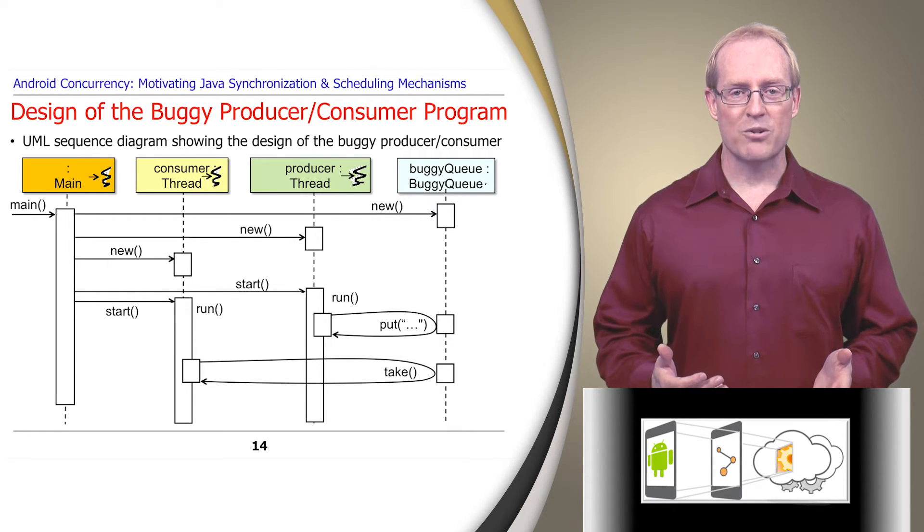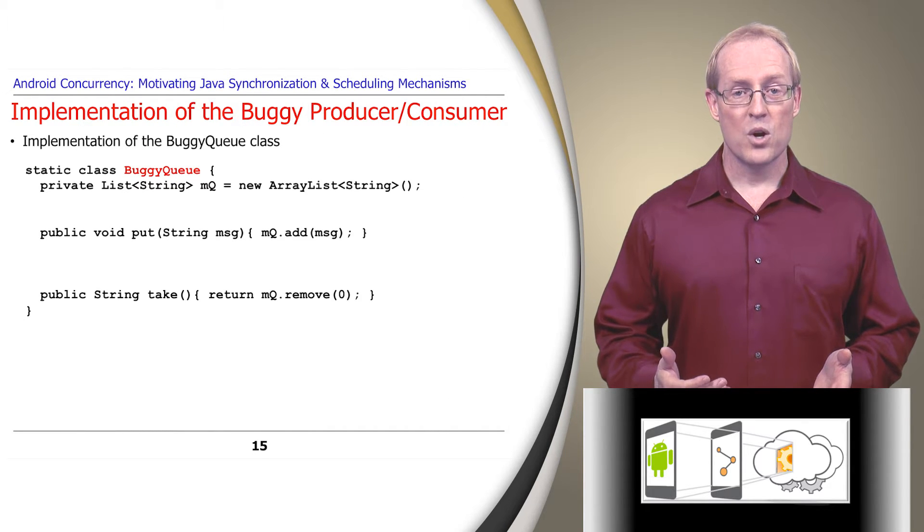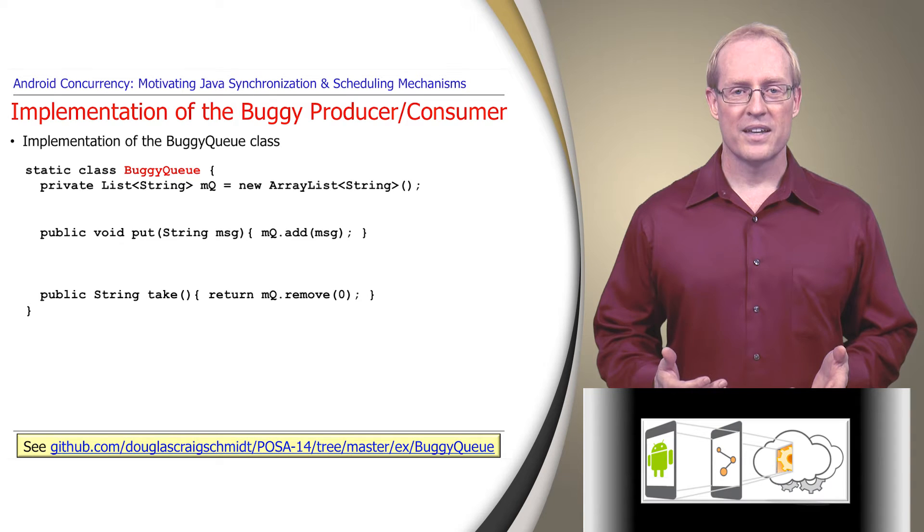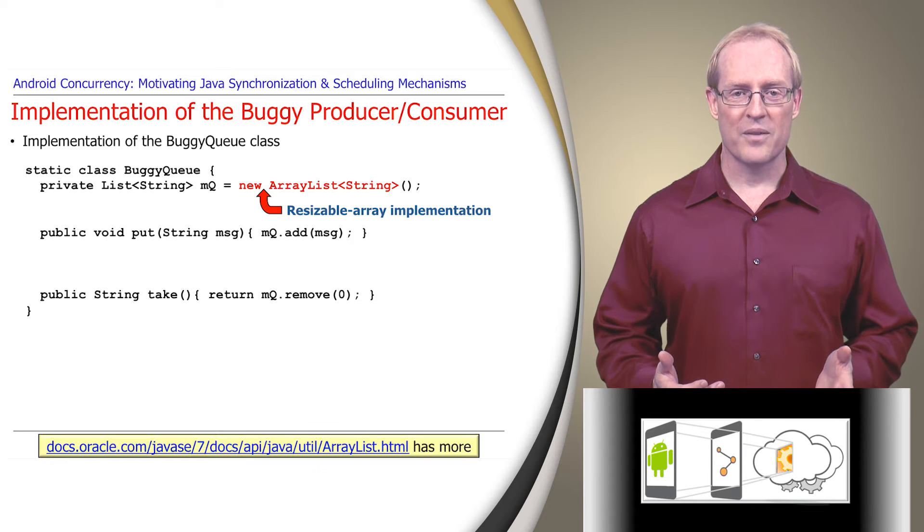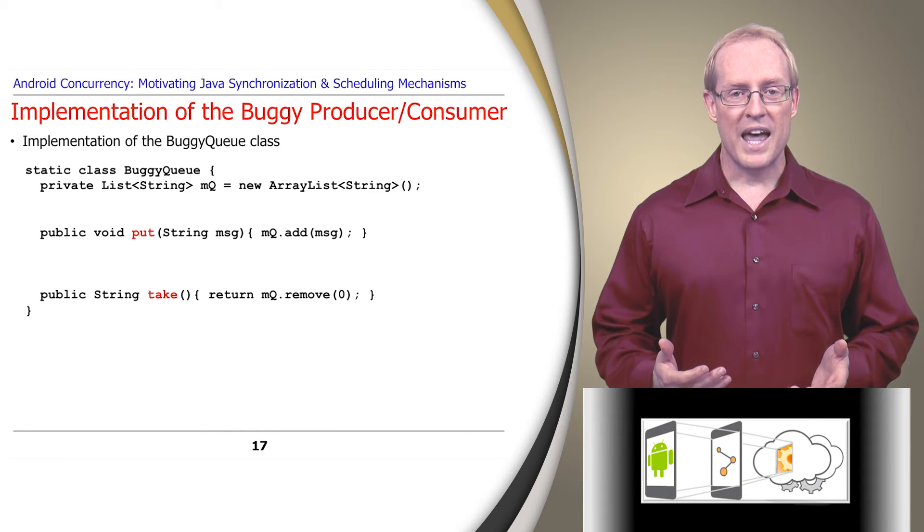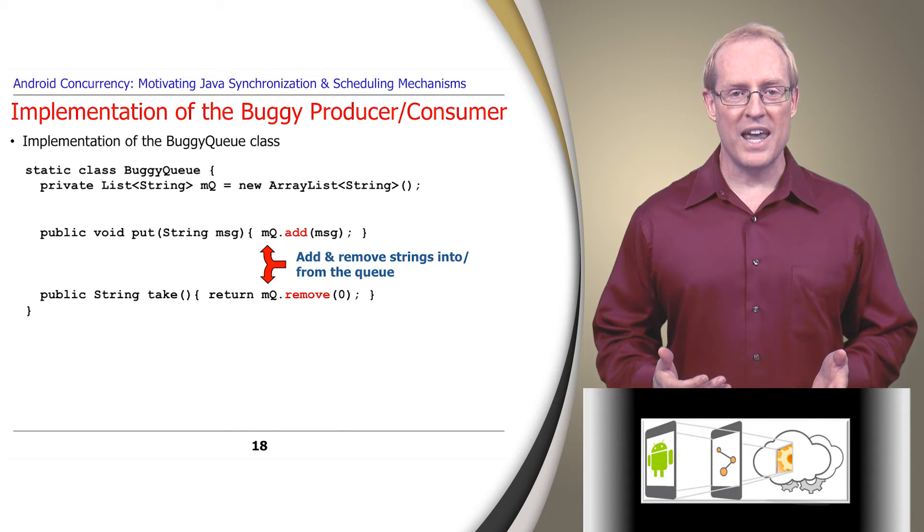To showcase a common synchronization problem, we'll examine the buggy queue implementation, which is available at this link. The elements in the queue are stored in a resizable Java array list, described at this link, that's instantiated with a string. Buggy queue's put and take methods add and remove strings from the tail and the head of the underlying MQ list, respectively.